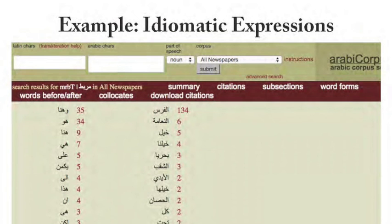This is also really great for finding idiomatic expressions. My students were reading a newspaper article that said 'hadha marbat al-faras,' and being a non-native speaker I'd never seen it before — it means 'and that's where you tie up the horse.' I looked up marbat in the corpus and found: marbat al-faras, marbat al-na'ama (the ostrich), marbat al-khayl. This is a way to find all the different words that mean 'horse' in Arabic. All of a sudden you get this feel for the word and also its frequency — 134 examples of that idiom in one year of newspapers. It's motivating: this is an idiom I want to learn.